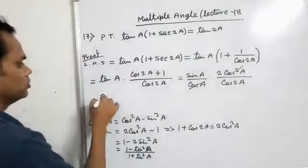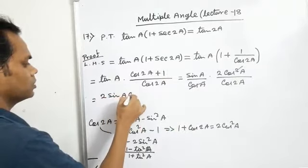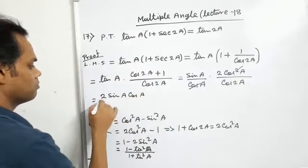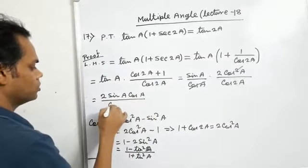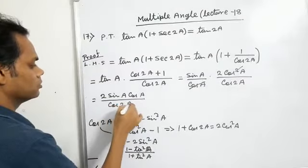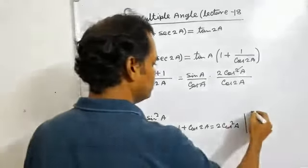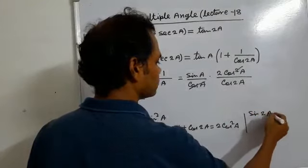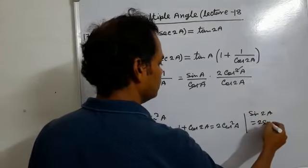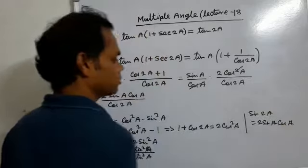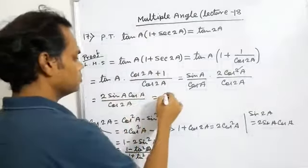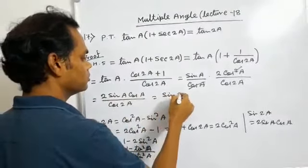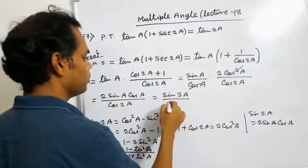So 2 sin A cos A equals sin 2A by cos 2A, which equals tan 2A.